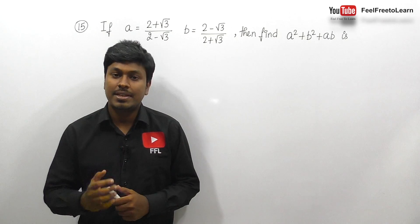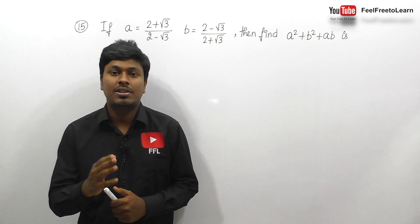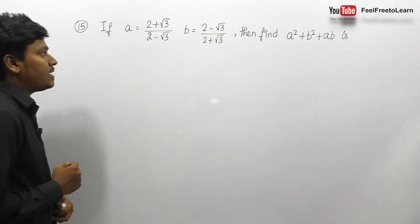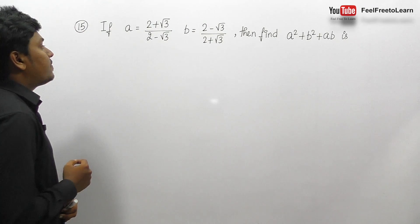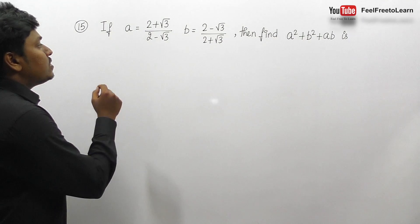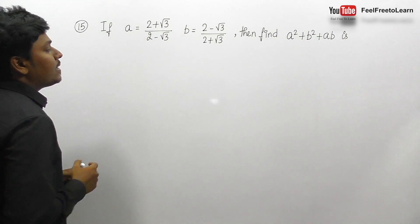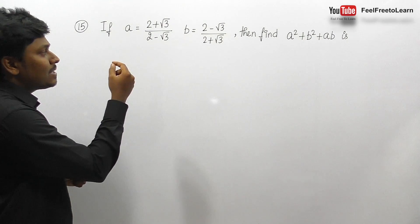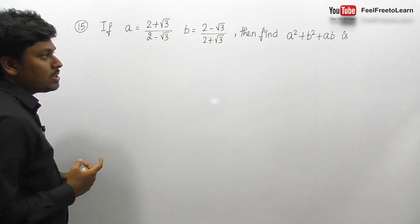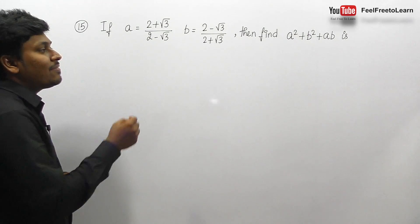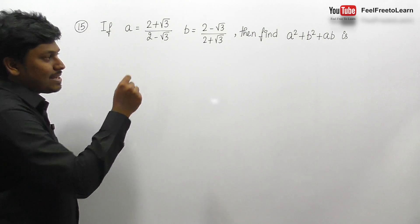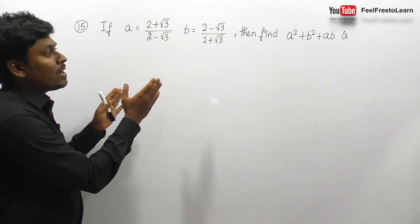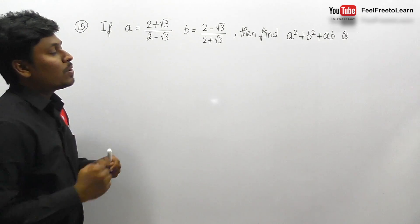Moving on to set number 4 on the topic algebra. Here is question number 15: if a is equal to (2 + √3)/(2 - √3) and b is equal to (2 - √3)/(2 + √3), find the value of a² + b² + ab.